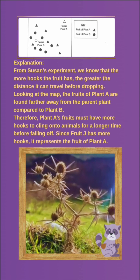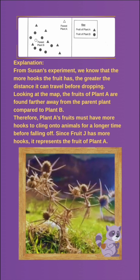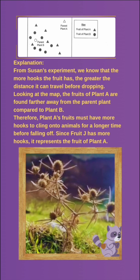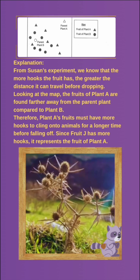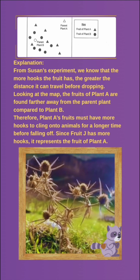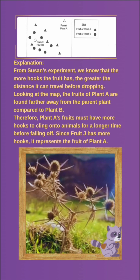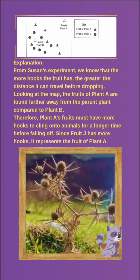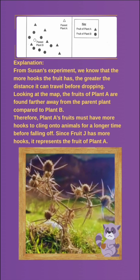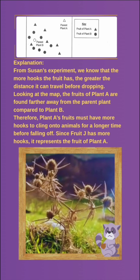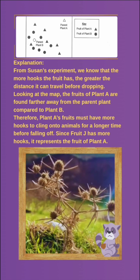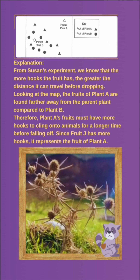From Susan's experiment, we know that the more hooks a fruit has, the greater distance it can travel before dropping. Looking at the map, the fruits of Plant A are found farther away from the parent plant compared to Plant B. Therefore, Plant A's fruit must have more hooks to cling onto animals for a longer time before falling off. Since Fruit J has more hooks, it represents the fruit of Plant A.